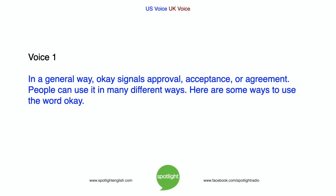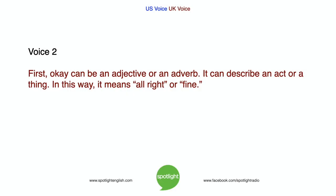In a general way, okay signals approval, acceptance, or agreement. People can use it in many different ways. Here are some ways to use the word okay. First, okay can be an adjective or an adverb. It can describe an act or a thing. In this way, it means all right or fine.